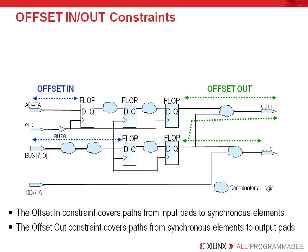The offset constraints cover paths from input pins to synchronous elements — the offset in — and from synchronous elements to output pins — the offset out constraint. Just as with the period constraint, the global offset constraints are associated with the clock net, which automatically groups the synchronous elements considered as path endpoints. In this example, with one clock driving the same five flip-flops, the offset in constraint covers the nine input paths — note the input bus is eight bits wide — and the offset out constraint covers the three output paths. The two source flip-flops have three different ways to reach two output pins.